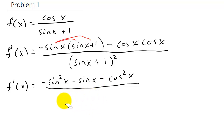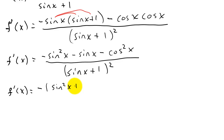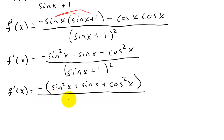The denominator is sine x plus 1, squared. Notice we have a minus sign throughout, so let's factor out a negative. So f prime of x equals negative times the quantity sine squared x plus sine x plus cosine squared x, over sine x plus 1, all squared.